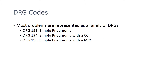For example, with pneumonia, DRG-193 is pneumonia, DRG-194 is pneumonia with a complicating or comorbid condition, and DRG-195 is simple pneumonia with a major comorbid condition.